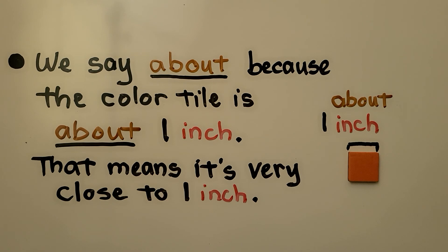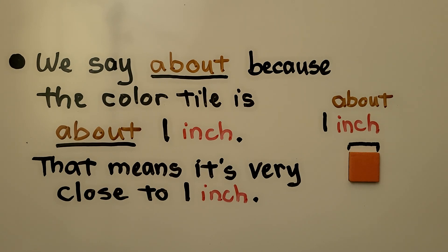We say 'about' because the color tile is about one inch — that means it's very close to one inch, but it's not a precise measurement. It's just about one inch.